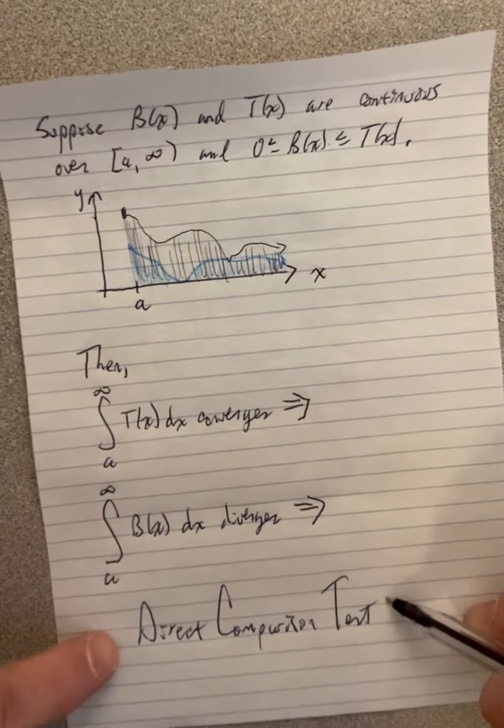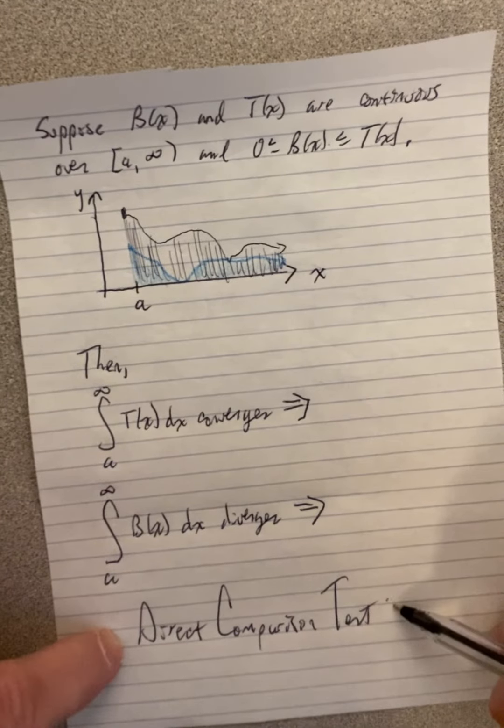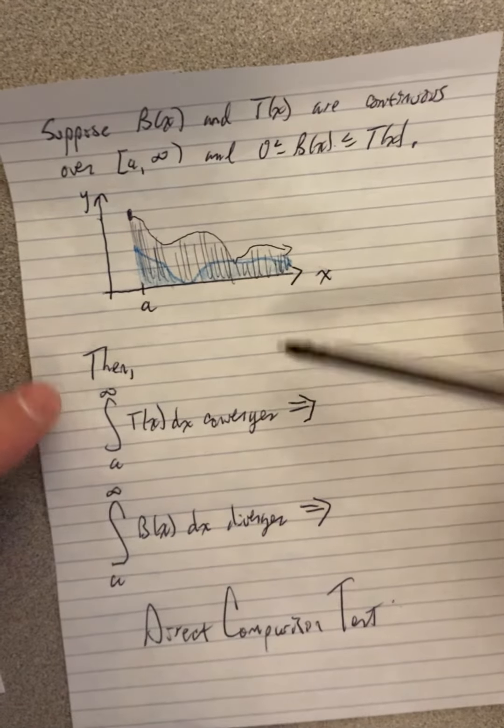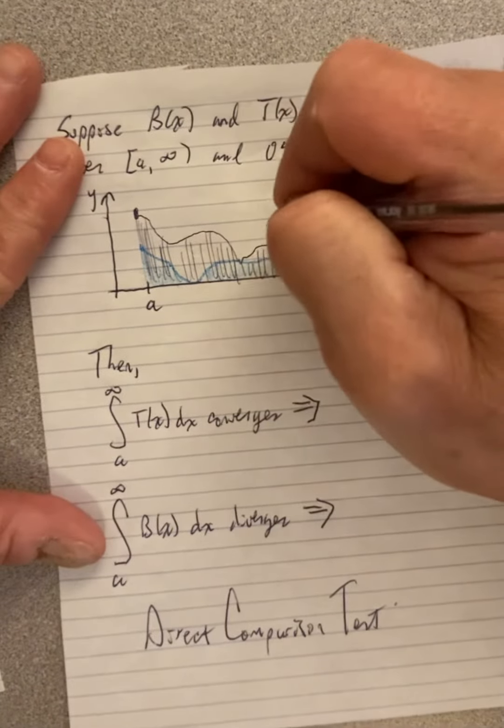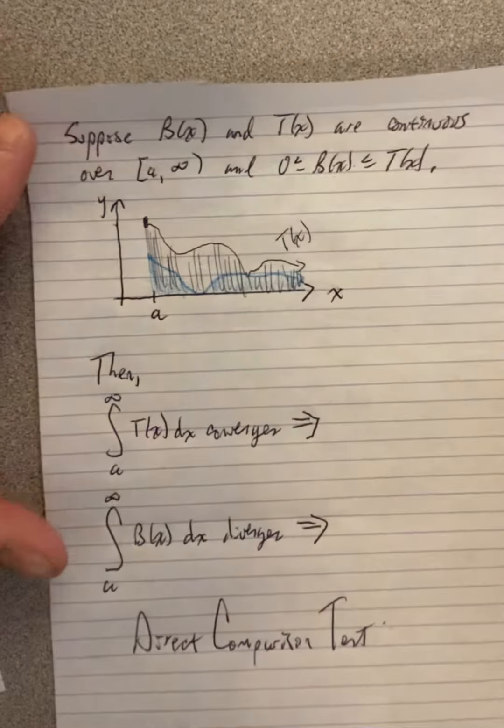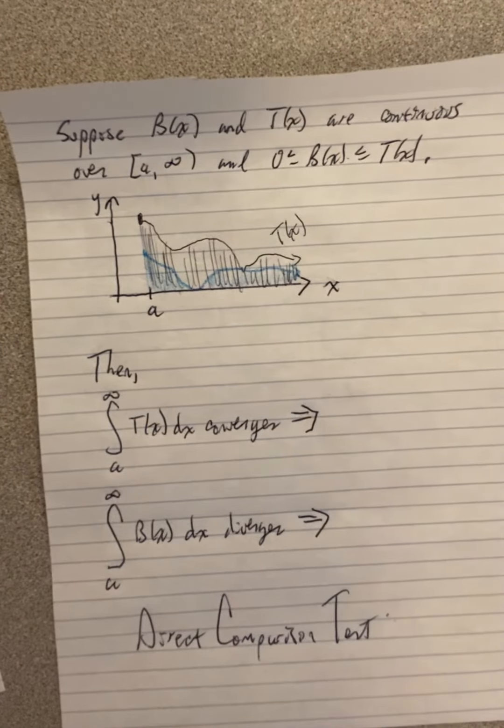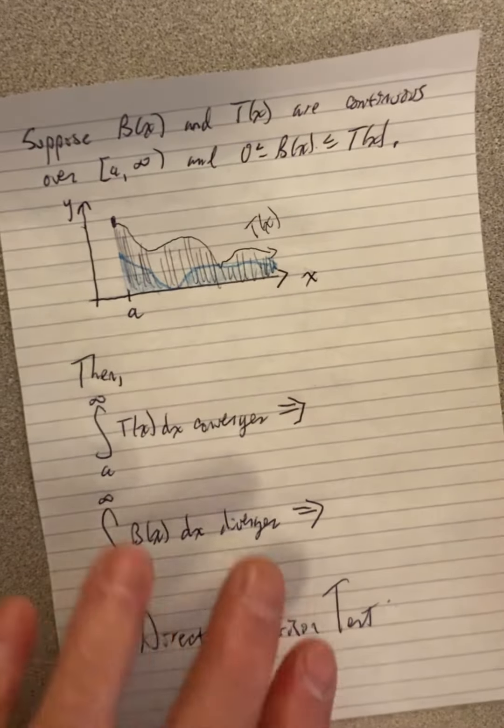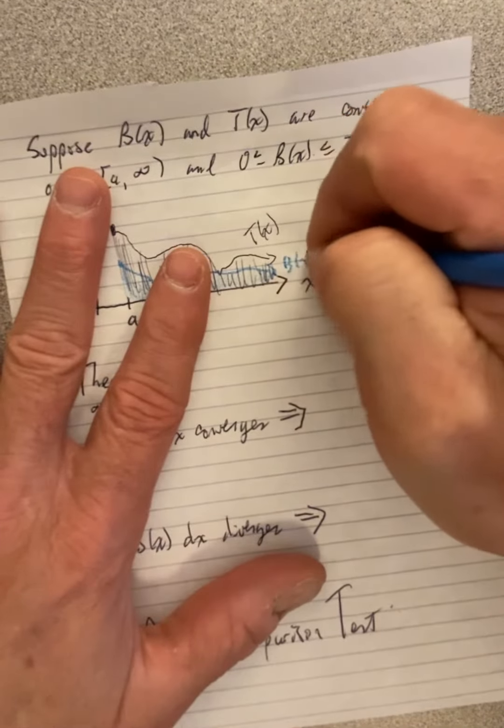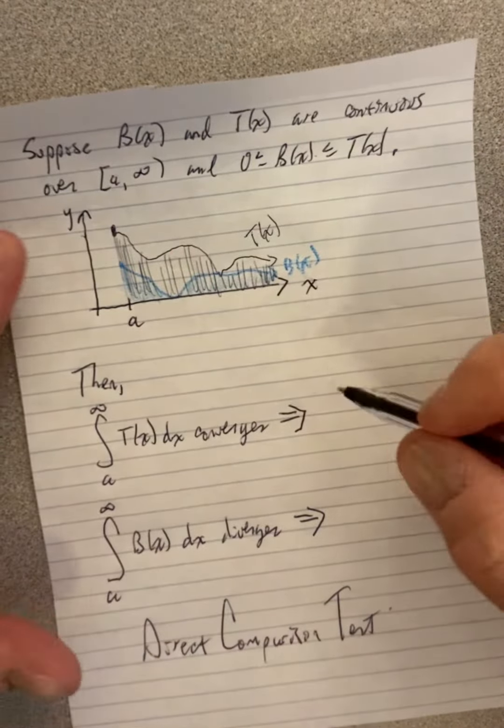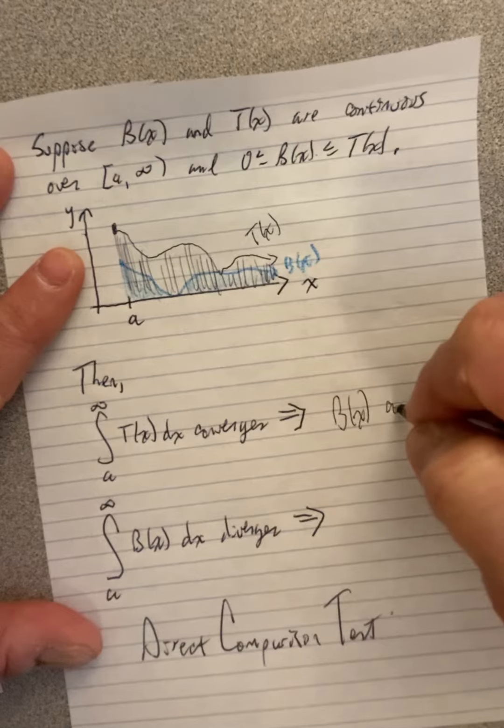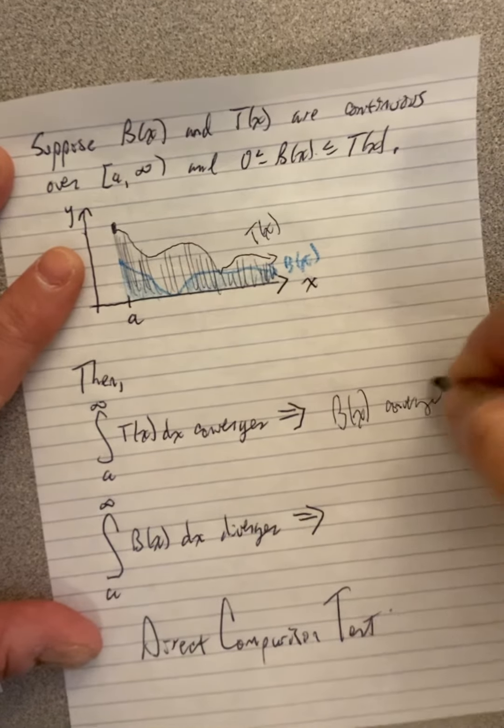Well, the direct comparison test, which is what I'm stating here, tells us that if this T function, if the integral of it from A to infinity over which T is continuous, if it converges, then the B function is going to also converge, which just makes sense.